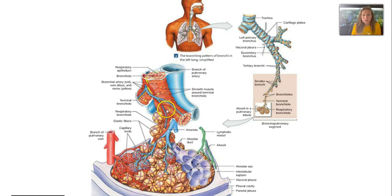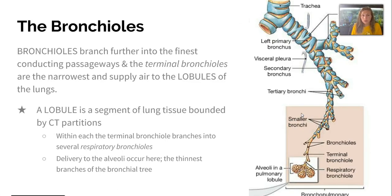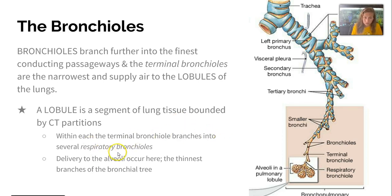Looking at this picture, we get closer and closer to the bronchioles and the alveolar surface — trachea, bronchi continuing to branch, like half of that bronchial tree, smaller and smaller to the bronchioles, and finally the terminal bronchioles. The smallest bronchioles, called terminal bronchioles, eventually lead into respiratory bronchioles, which supply air to the lobules of the lungs. Each lobule is a segment of lung tissue bounded by connective tissue partitions, and this is how we deliver air to the alveoli — the thinnest area of the bronchial tree branches.